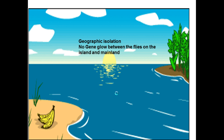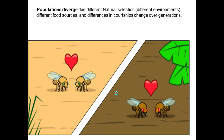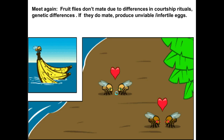For example, in geographic isolation: a group of fruit flies lay their eggs on bananas, and those bananas float away from the mainland to another island. On that island, those fruit flies are separated from the mainland — they have offspring together, different food sources, and over generations different selective pressures from that environment. When they meet again with the mainland fruit flies, they no longer interbreed, and if they do, they produce unviable, infertile offspring — thus they have evolved into separate species.